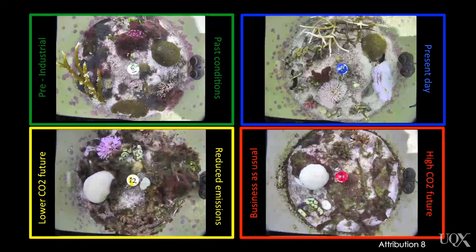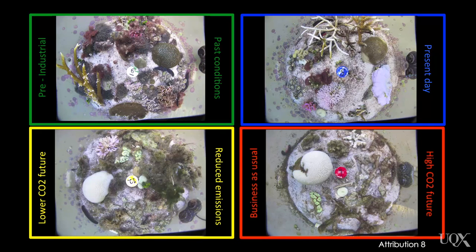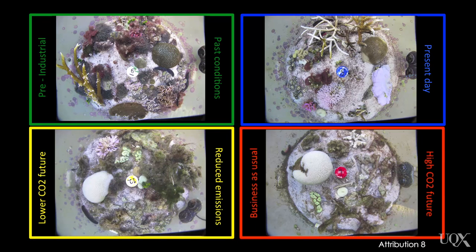The top two conditions — pre-industrial and present-day treatments — maintained healthy corals and other organisms. The bottom two conditions reveal a more complex set of changes. With mild increases in carbon dioxide and temperature, typical of a reduced emissions future, only a few corals and other organisms survived. Reefs like this may be able to recover if we stabilize ocean conditions in the long run. In the business-as-usual future, however, where carbon dioxide and temperature increase dramatically, no corals survive. This is a future where the marine resources that support people today will have largely disappeared.